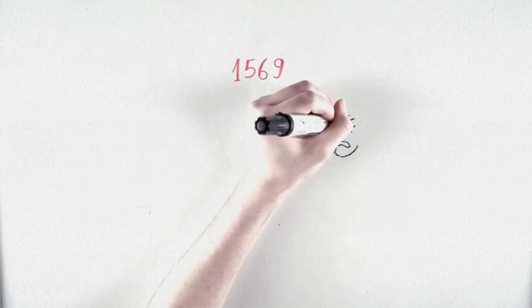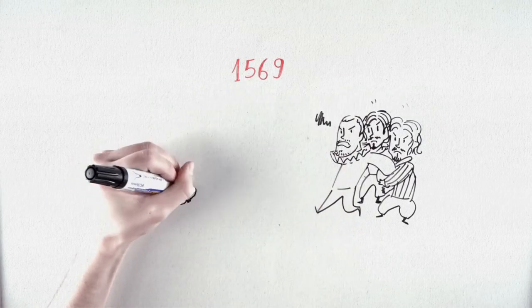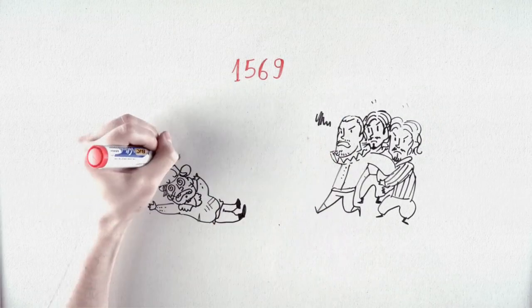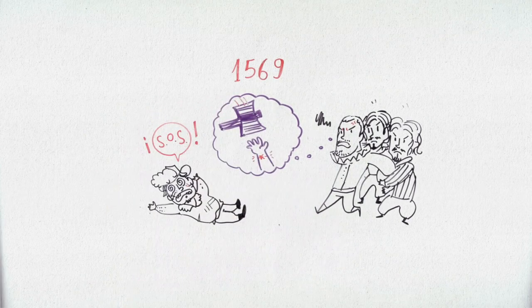In 1569, Cervantes was arrested in Madrid and sentenced to the amputation of his right hand for injuring Antonio de Segura. A punishment applied for using weapons in the vicinity of the royal residence, although it is not clear if they ever applied it.